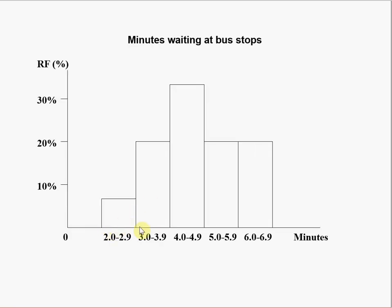All the bars are adjacent to each other because between 2.9 and 3.0 there should be no space. This type of bar chart — where all bars for continuous variables are adjacent — has a special name: the histogram. A histogram is a particular kind of bar chart for continuous variables where all bars are adjacent to each other.